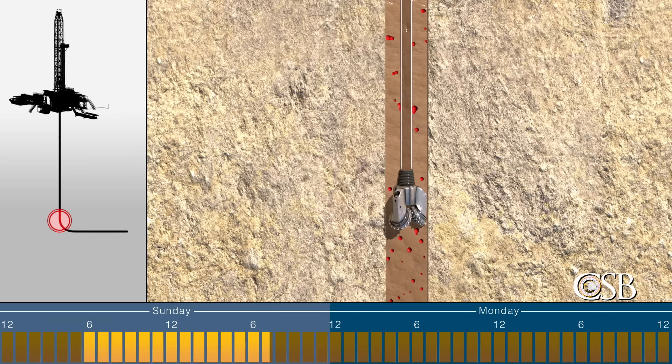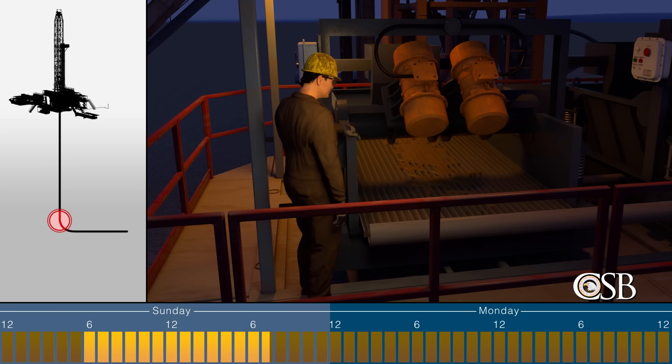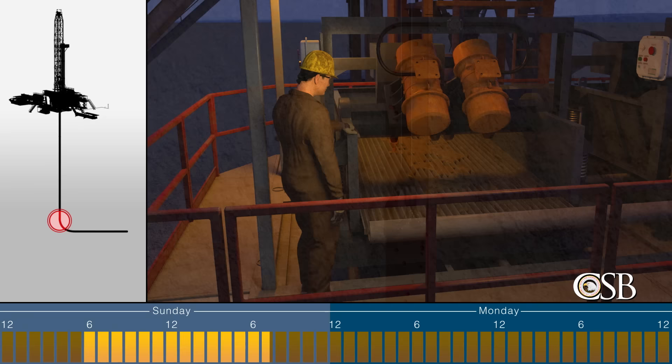At that time, the drilling crew performed a 45-second flow check to see if gas was flowing in the well. The crew did not observe any flow of gas and believed the well to be stable, but the CSB determined that the flow check was inadequate.